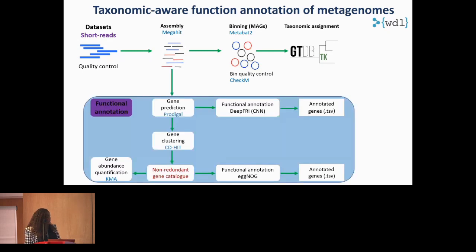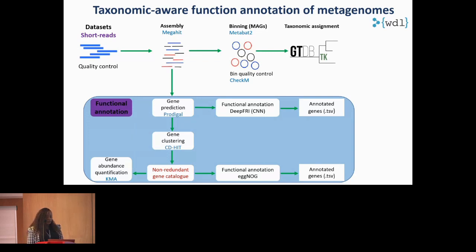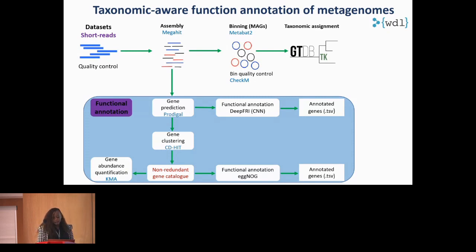For the second phase — the functional annotation phase — it predicts genes using Prodigal, then clusters these genes based on 95% sequence identity using CD-HIT to generate a non-redundant gene catalog. For functional annotation, we use two complementary methods: DeepFRY, which is based on deep learning, and EggNOG, which is based on orthology.